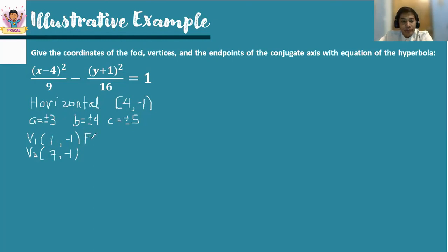For the endpoints of the focal axis, f sub 1 and f sub 2, since they are collinear with the vertices, they will also have the same k value, which is negative 1. So we use the c value: 4 minus 5 and then 4 plus 5. 4 minus 5 is negative 1, then 4 plus 5 is 9.